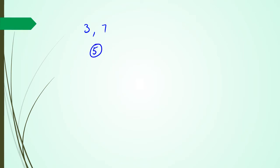Looking at three and seven you can kind of see that five is the middle. But if I make it bigger — say between nine and 25 — what's the number in the middle? You can't be sitting there counting, so the best way to do it is add these two numbers up. 25 plus 9 is 34, and then when you divide it by two you get 17.